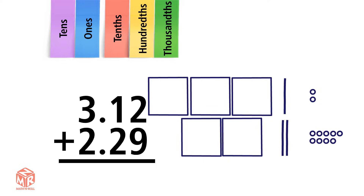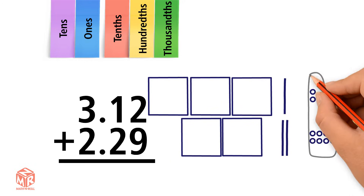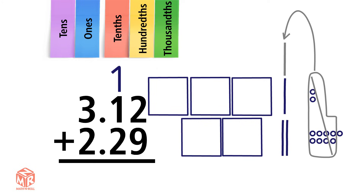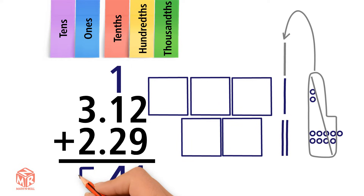We start adding from right to left, so we add the hundredths first. 2 plus 9 equals 11. 11 is more than 9, so we regroup ten hundredths to make one tenth. We're left with one hundredth, which we put in the hundredths column. Now we add the tenths. 1 plus 1 plus 2 equals 4. So we put 4 in the tenths column and we bring down the decimal. Now we add the ones. 3 plus 2 equals 5. So 3.12 plus 2.29 equals 5.41.